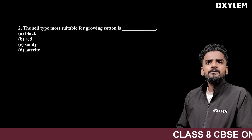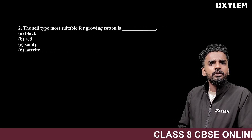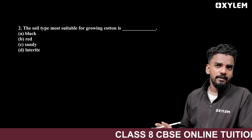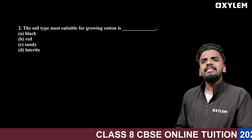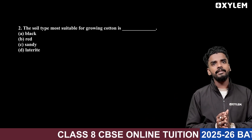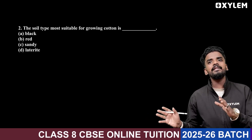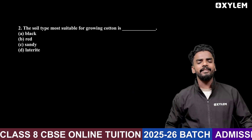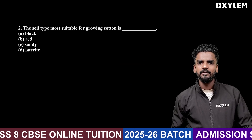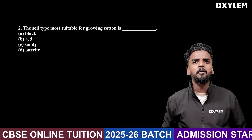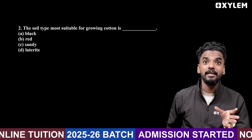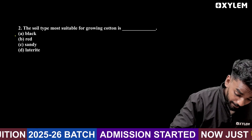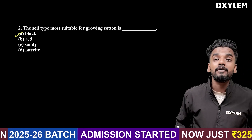The soil type most suitable for the growing of cotton — cotton cultivation. It's the best type of soil. What is cotton soil? The answer is black — black cotton soil.